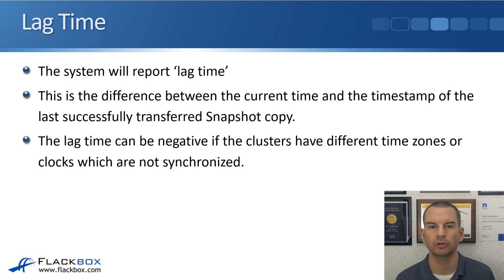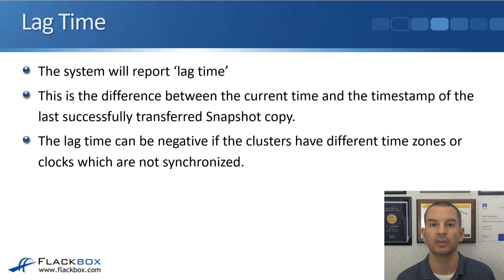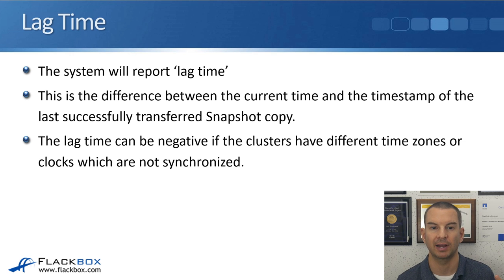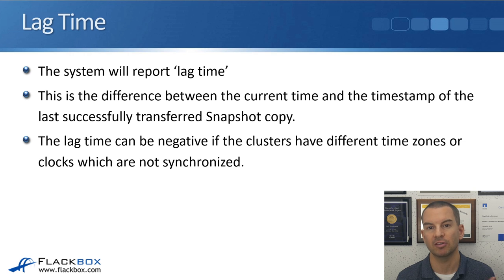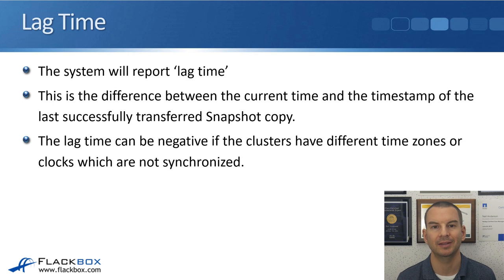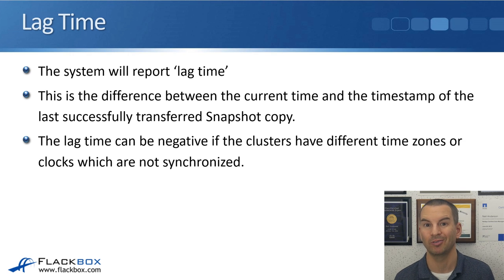Once you have configured your DP mirror, if you look at the reports for that SnapMirror relationship in the GUI or command line, you'll see that one of the things reported is the lag time. The lag time is the difference between the current time and the timestamp of the last successfully transferred snapshot copy. So if you've got a schedule of 10 minutes, the lag time could go up to 10 minutes and that would be normal. If the lag time says 9 minutes it just means it was 9 minutes since the last replication — we expect it to happen again in one minute. If you had a 10 minute replication schedule and saw a lag time of one hour, that would indicate a problem and you'd want to investigate.